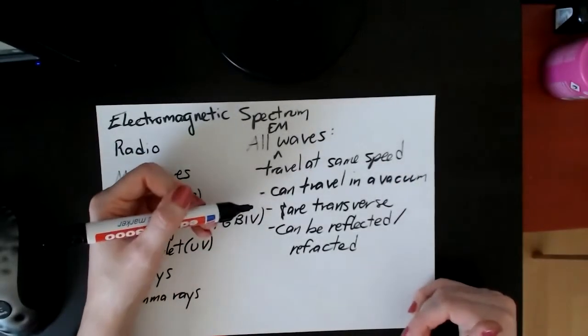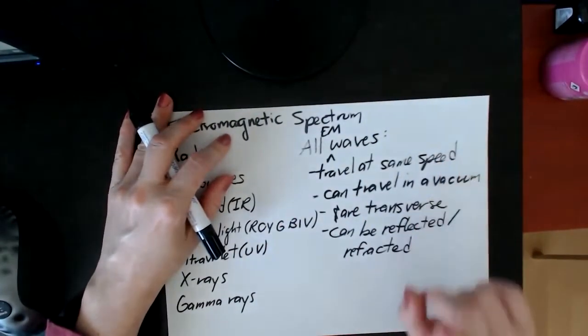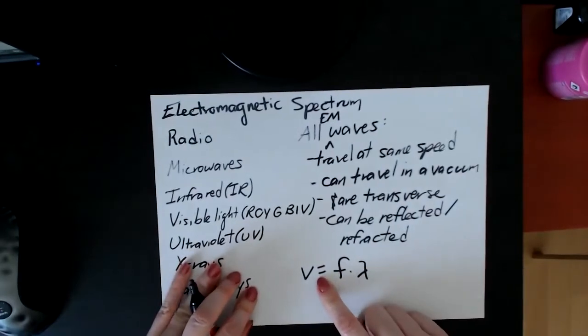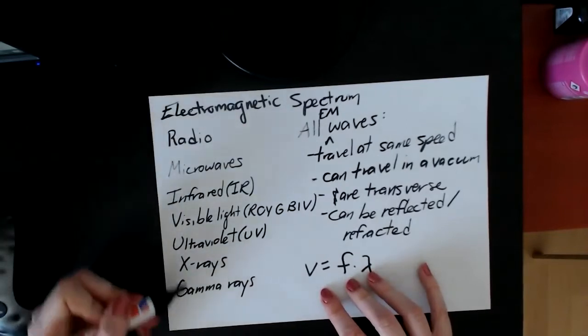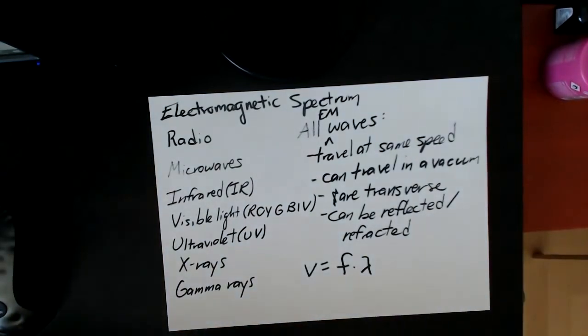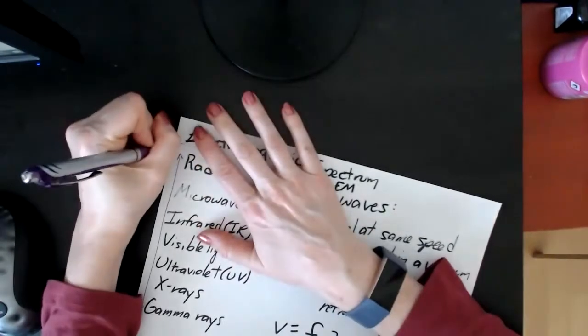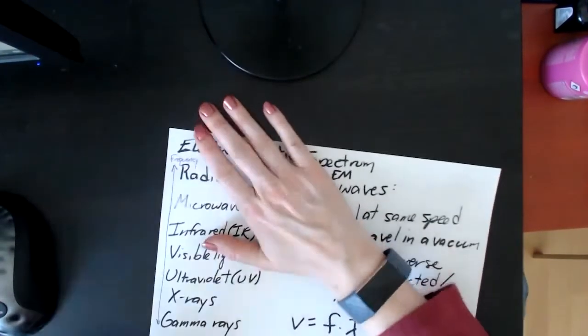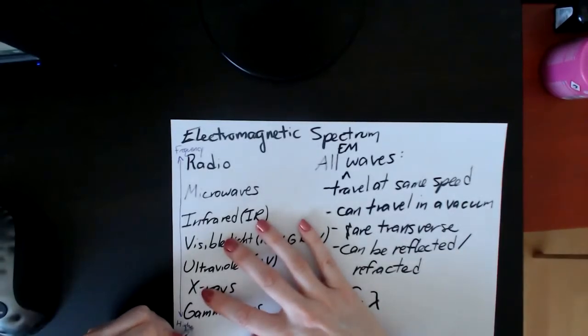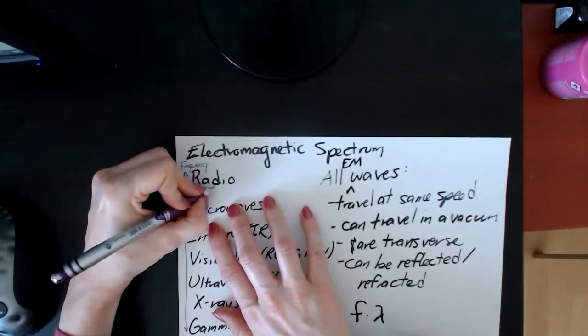So all EM waves have these four properties in common. So why do we separate them out like this if they have all these things in common? They travel at the same speed, but if you remember, our basic wave equation is this: frequency times wavelength equals speed. So they all travel at the same speed. What is different for all of these waves is not their speed, but instead their frequency and their wavelength.